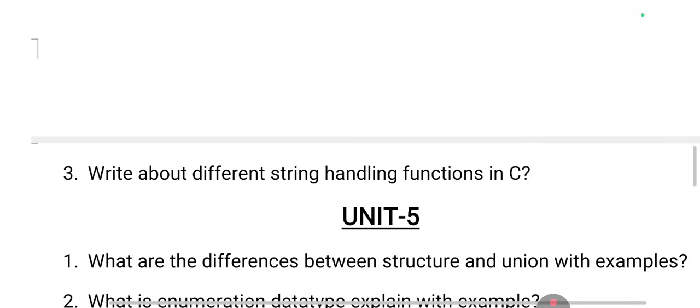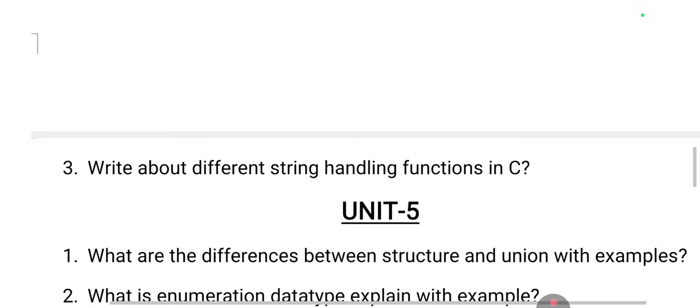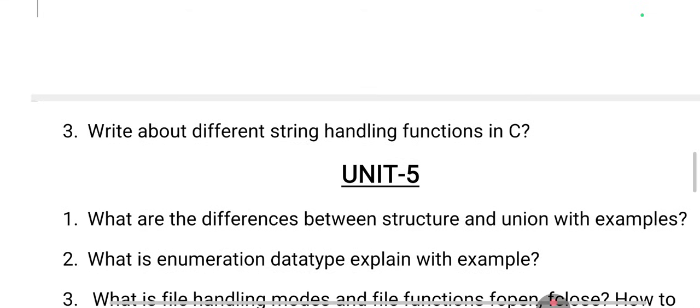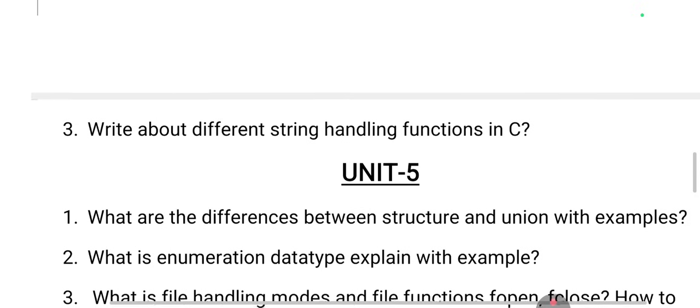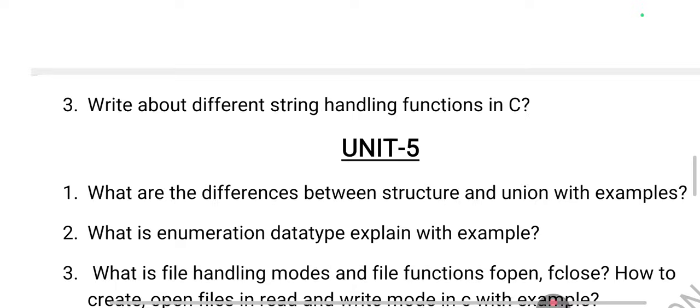The difference between structure and union is very important — you must practice both. A structure is a collection of dissimilar type values stored in a single variable, unlike arrays which store only similar types. You will compulsorily get one question on structure or union. Enumeration means assigning integer constants to variables and is also a user-defined data type, similar to structure and union.